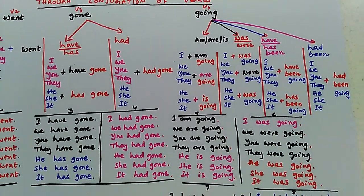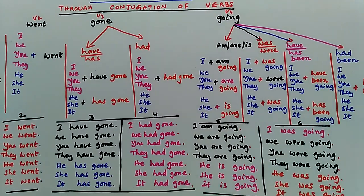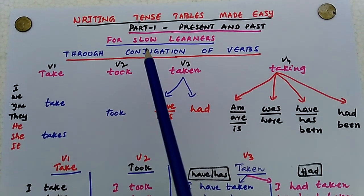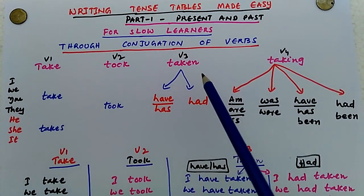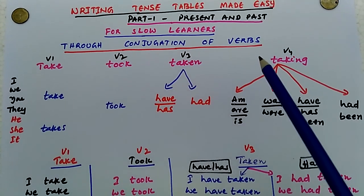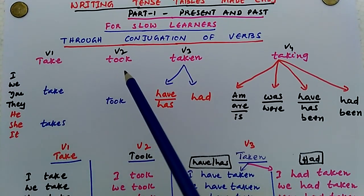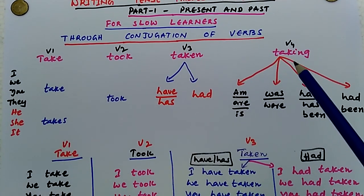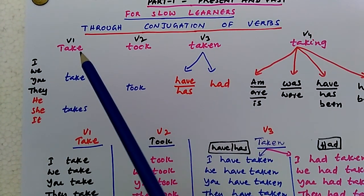Let us write the tense tables taking another verb — the conjugation of the verb 'take': take (verb one), took (verb two), taken (verb three), taking (verb four).